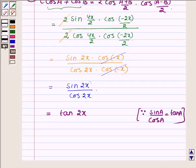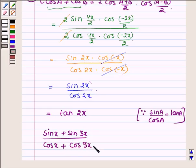And hence we have sin x plus sin 3x upon cos x plus cos 3x is equal to tan 2x. Hence proved.